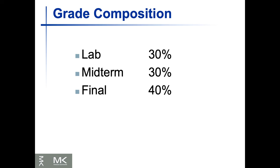The grade composition is roughly 30-30-40. Labs are around 30 percent total, so each lab is roughly 4 to 5 percent. Then you have the midterm and the final. I haven't decided on quizzes yet, but for now assume you don't have quizzes — just pre-labs and lab assignments.